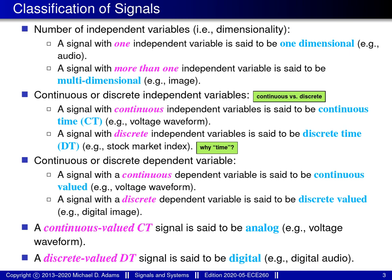We can classify signals in a number of very basic ways. The first is we can classify a signal on the basis of the number of independent variables it has. This is sometimes referred to as the dimensionality of the signal. A signal with one independent variable is said to be one-dimensional. An example of a one-dimensional signal would be an audio signal, where you have air pressure fluctuations versus time — time is the one independent variable.